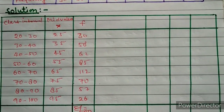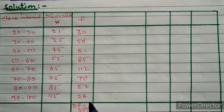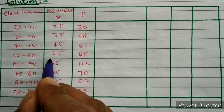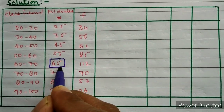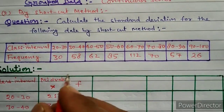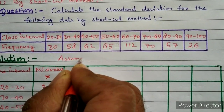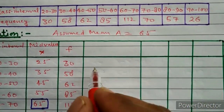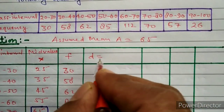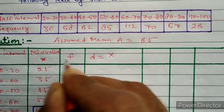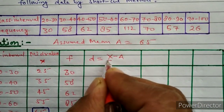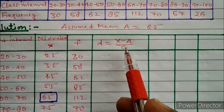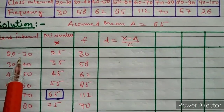For the shortcut method, we do not need to calculate the mean. Instead, we assume one of the x values as the mean. For example, we assume the mean as 65, so the assumed mean a equals 65. In the next column we calculate d, where d equals x minus assumed mean a, divided by c. Here c means the class width, which is the difference between the upper and lower limit of a class interval. So 30 minus 20 equals 10, meaning c is 10.